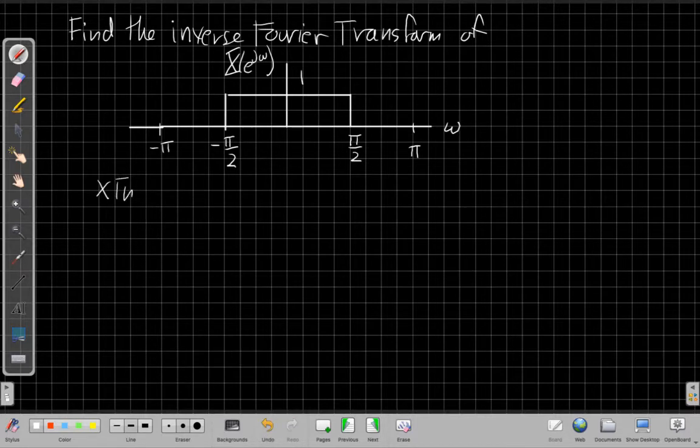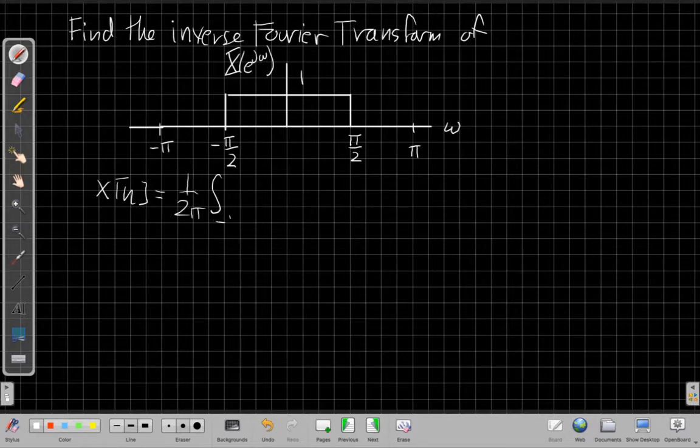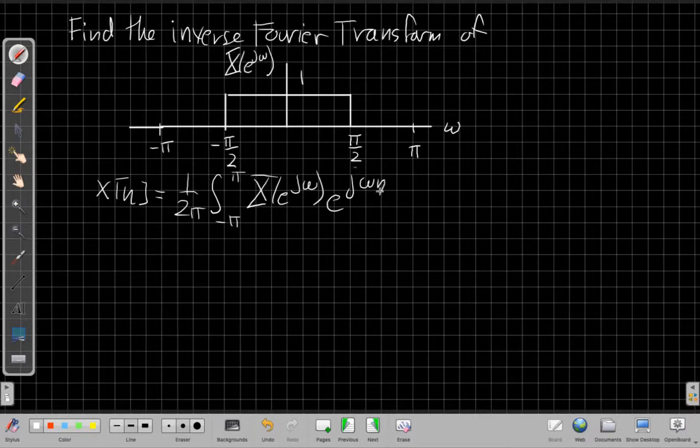I'm just going to start directly from my Fourier synthesis equation. So it's 1 over 2 pi, the integral from minus pi to pi, x of e to the j omega, e to the j omega n, d omega.